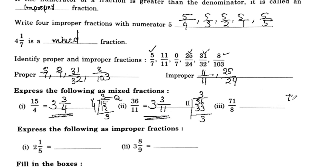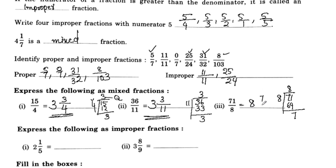Next, 71 by 8. 8 times 8 is 64. 71 minus 64 is 7. So the quotient is 8, remainder is 7, and the divisor is 8. The mixed fraction is 8 and 7 by 8.